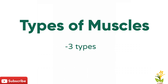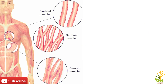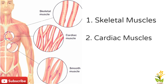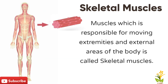Next is the types of muscles. There are three main types of muscles in the human body: skeletal muscles, cardiac muscles, and smooth muscle. The muscles which are responsible for moving extremities and external areas of the body are called skeletal muscles.